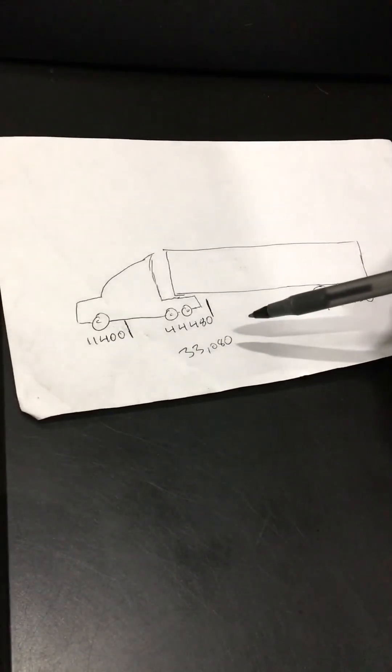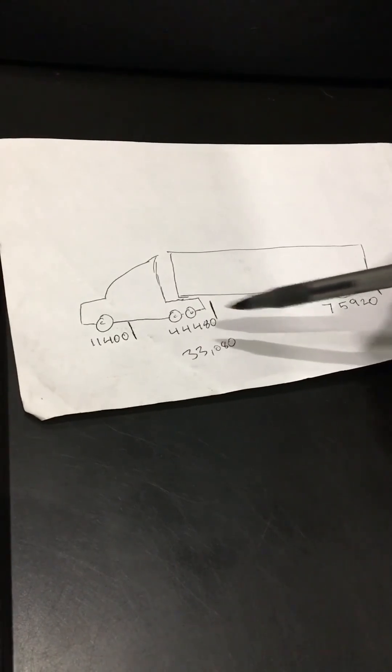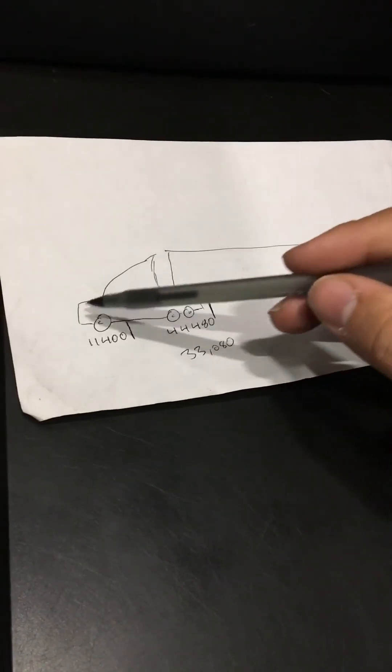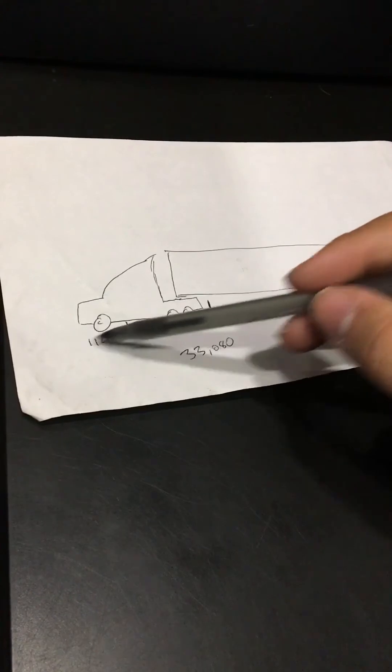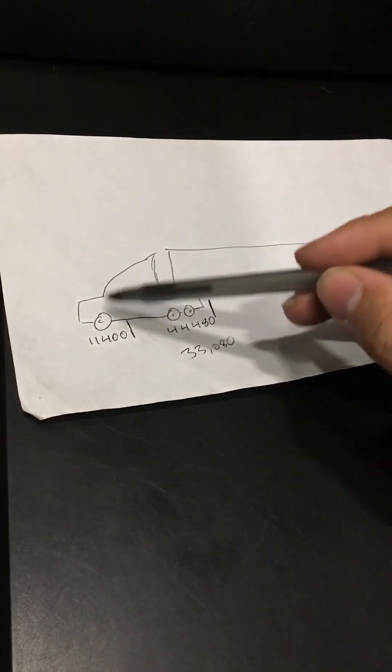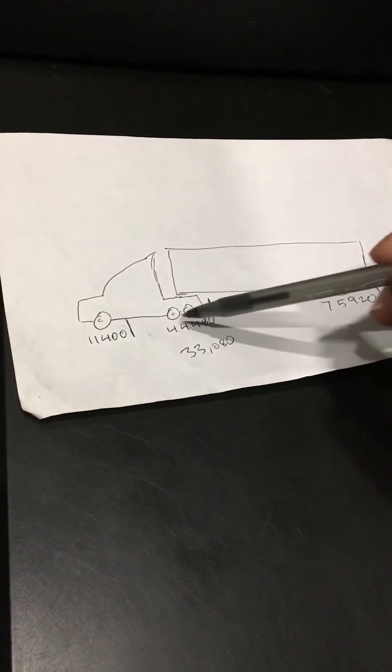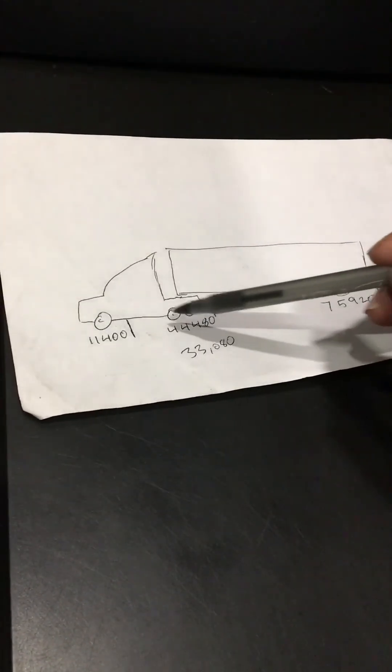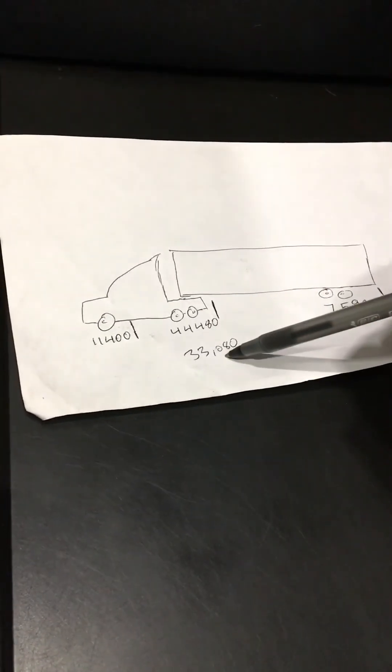Hopefully that makes sense and you guys understand how to do that. First weight you get the steer, the second weight is going to give you the weight of the truck itself. So the weight of the truck minus the steers gives you the drive axle.